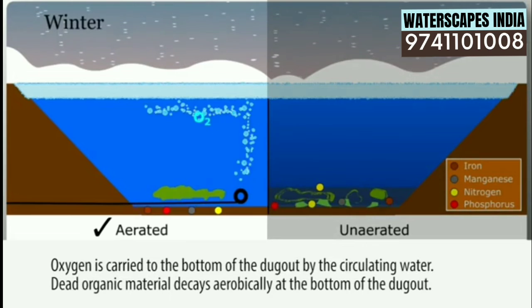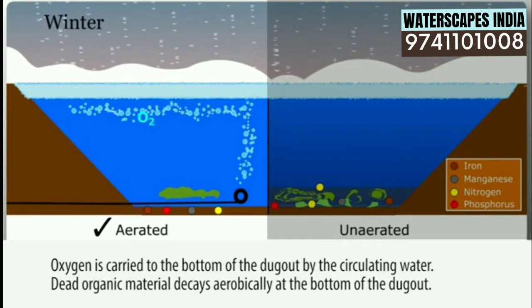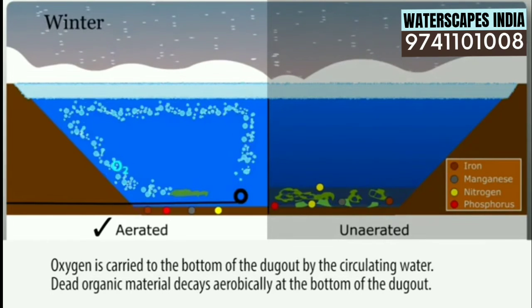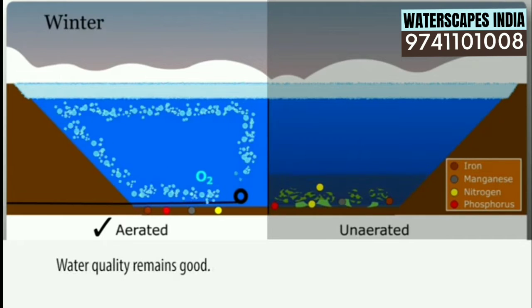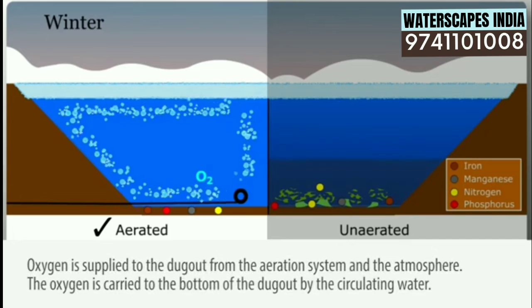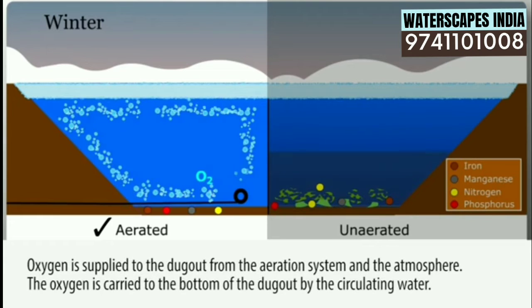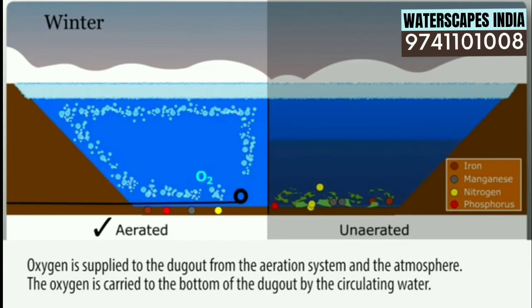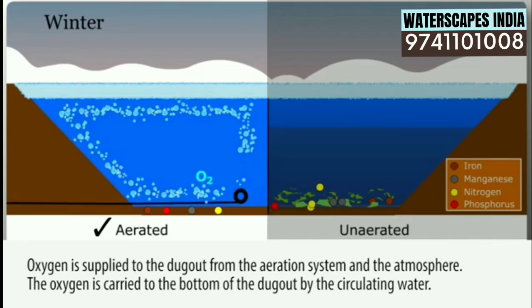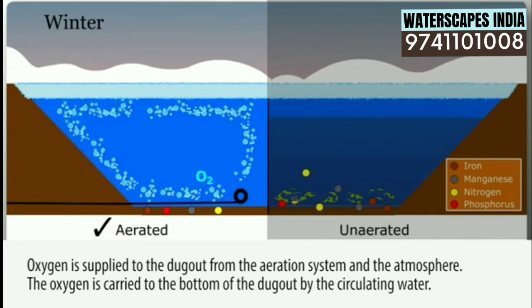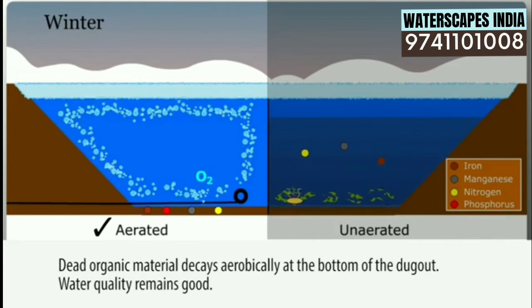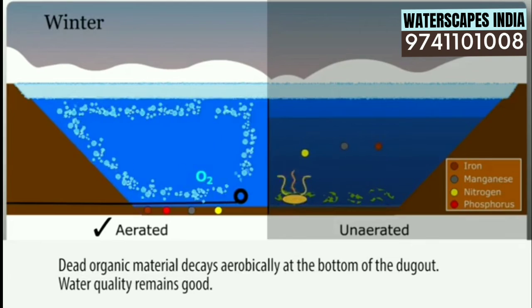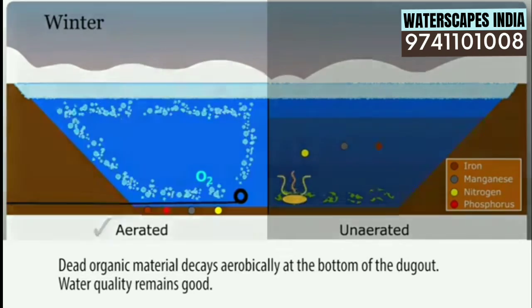Winter. Aerated: oxygen is carried to the bottom of the dugout by the circulating water. Dead organic material decays aerobically at the bottom of the dugout. Oxygen is supplied from the aeration system and the atmosphere, and is carried to the bottom by the circulating water, ensuring dead organic material continues to decay aerobically. Water quality remains good.